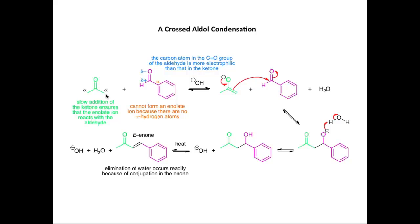Under these reaction conditions, we can deprotonate propanone and form an enolate ion at one of the alpha positions — these are identical, so it doesn't matter which carbon we deprotonate. We can then react the enolate ion with the carbonyl of benzaldehyde via nucleophilic addition as shown here, forming this new carbon-carbon bond. The alkoxide ion is then protonated with water to form the product from the aldol reaction. All that remains is to effect an elimination of water from that product by heating with hydroxide ion, to form the enone product — a ketone with an alkene — where the elimination of hydroxide ion is facile because the product is stabilized by conjugation.